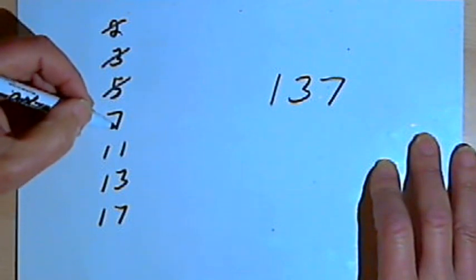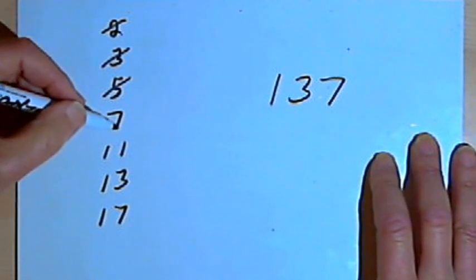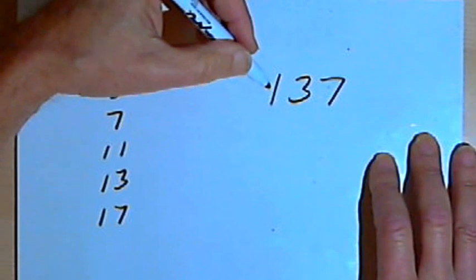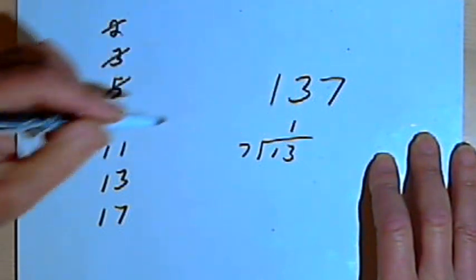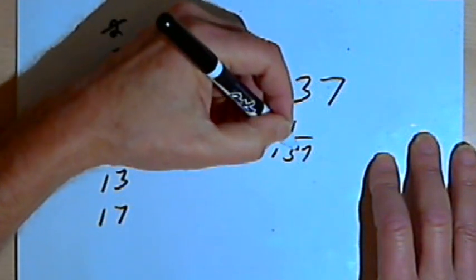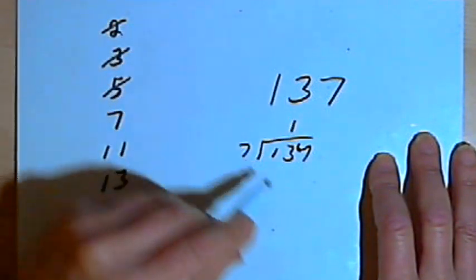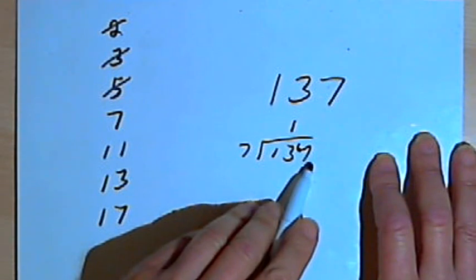How about 7? Well, let's see. If I were to divide 7 into 137, 7 would go into the 13 one time, and I'd have a 6 remainder. So I'd have to divide 7 into 67, and that won't go evenly. So 7 is out.